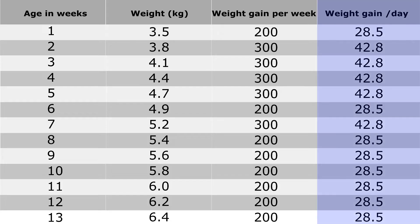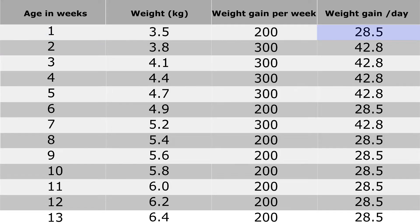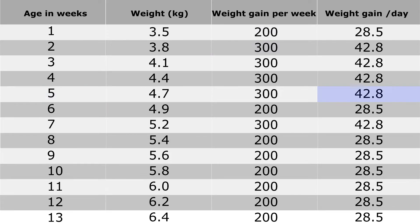This table shows the average weight gain per day and per week for a boy. In the first week, weight gain is 28.5 grams per day, with a total of 200 grams for the week. In the fifth week, weight gain is 42.8 grams per day, with a total of 300 grams for that week.